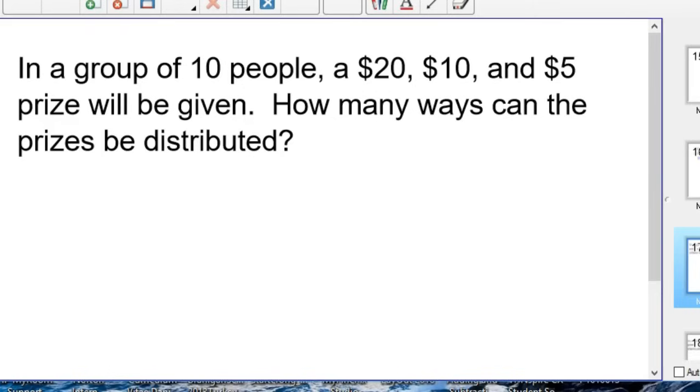All right. This is a permutation because order matters. It matters who gets the $20, it matters who gets the $10 and who gets the $5. At least it's going to matter to them. It may not matter to the person giving out the money, but it definitely matters to the people receiving the money.